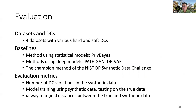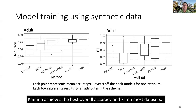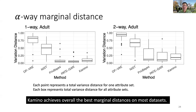We did many evaluations, but due to timing constraints I'm showing you only three of them. First, we generate synthetic data using Camino and state-of-the-art methods — Camino has the closest number of violations with the truth, and hence preserves data consistency. Second, we train a set of classifiers on the synthetic data and evaluate on the true data; on the EIDA dataset, Camino has the best overall accuracy on F1 compared to other methods. Next, we measure the k-way marginal distance between the synthetic data and the true data — Camino achieves overall the best marginal distances on most datasets.